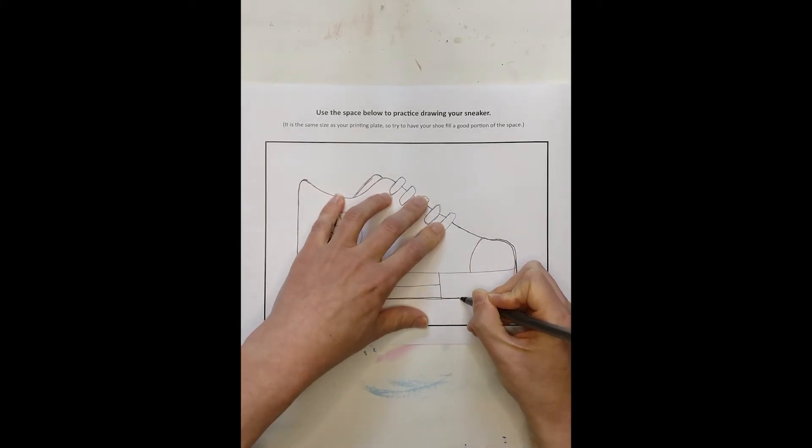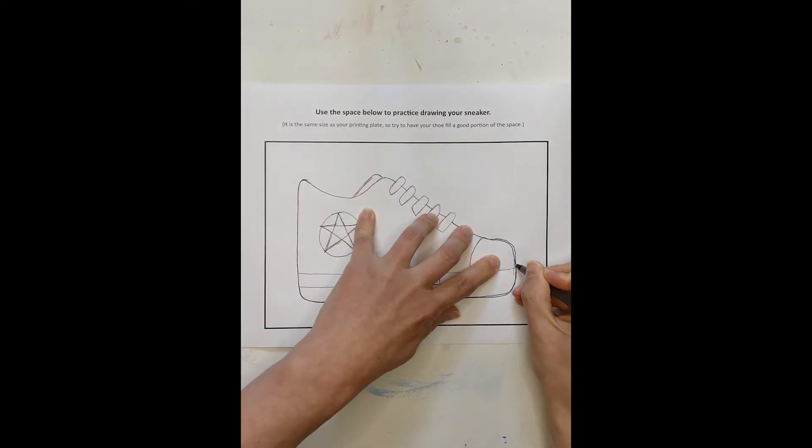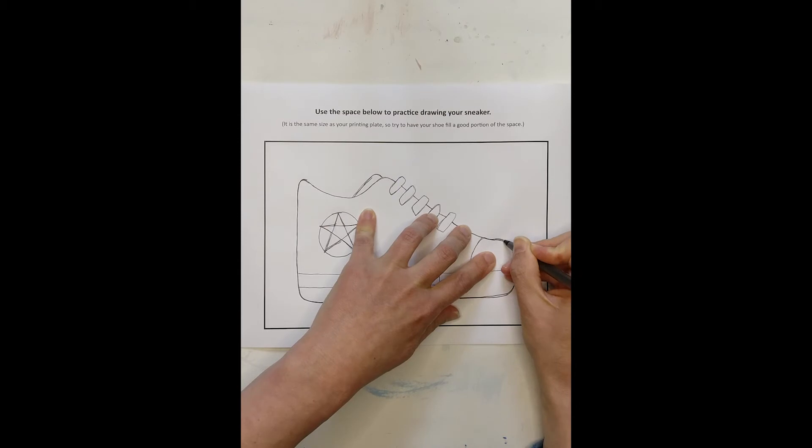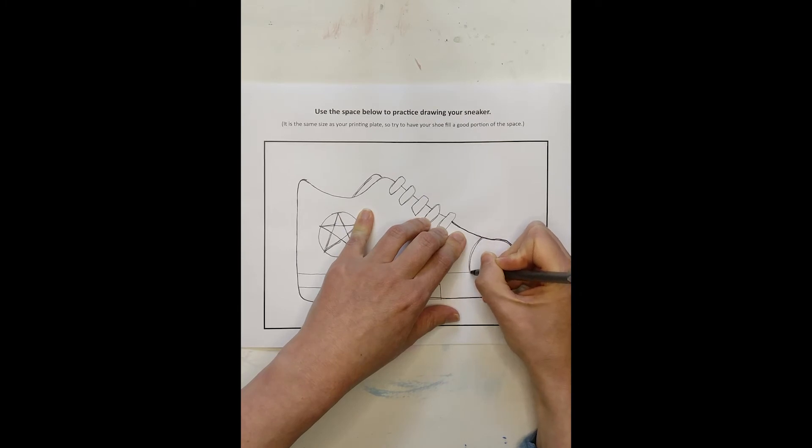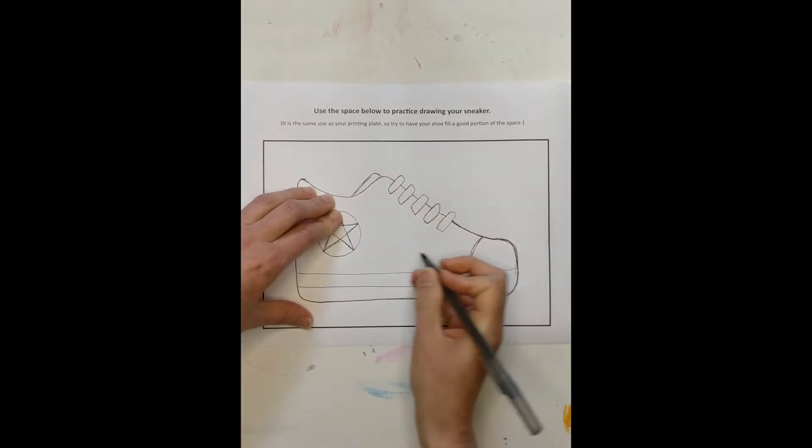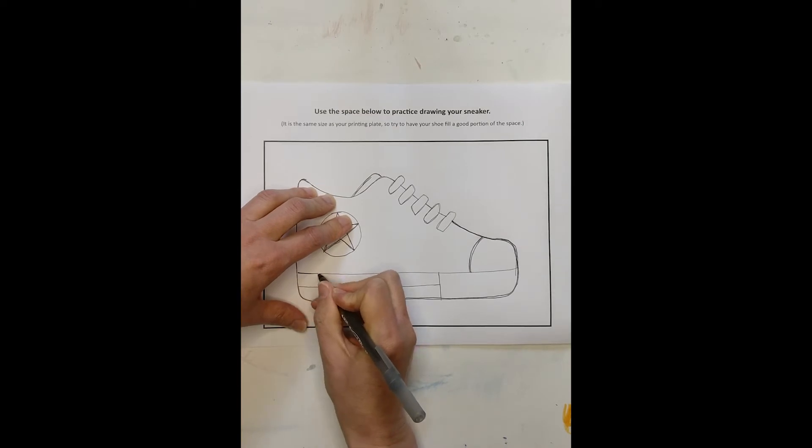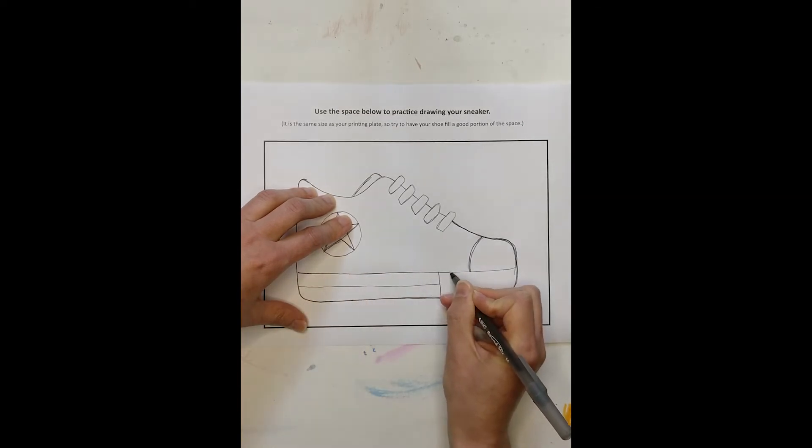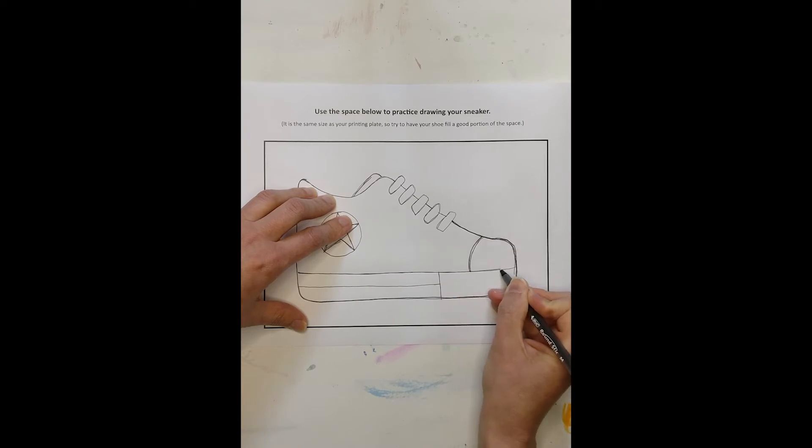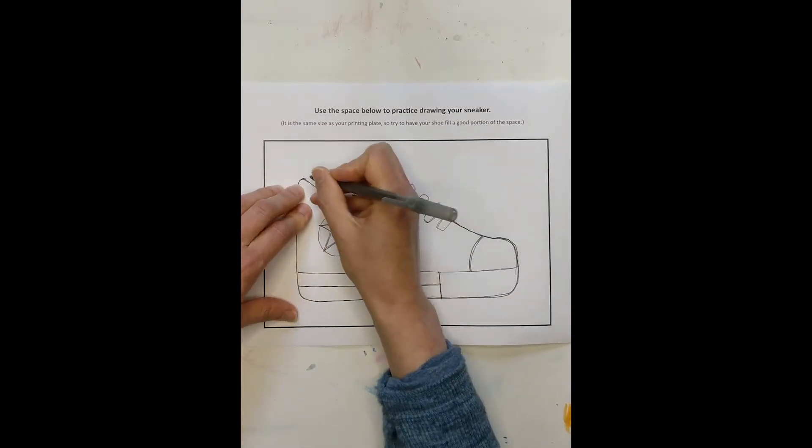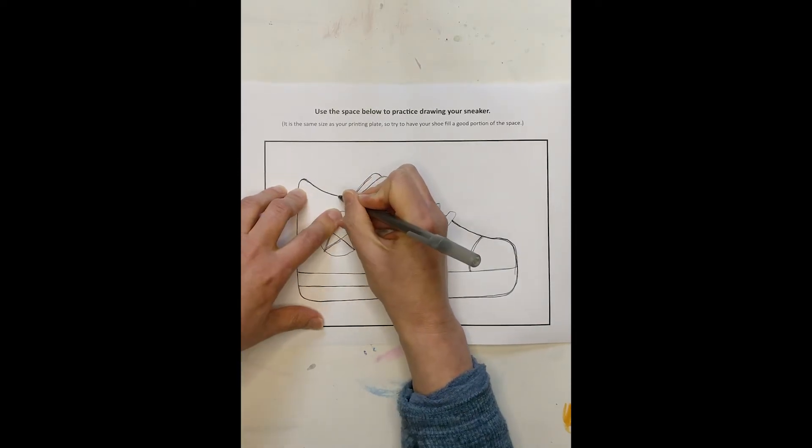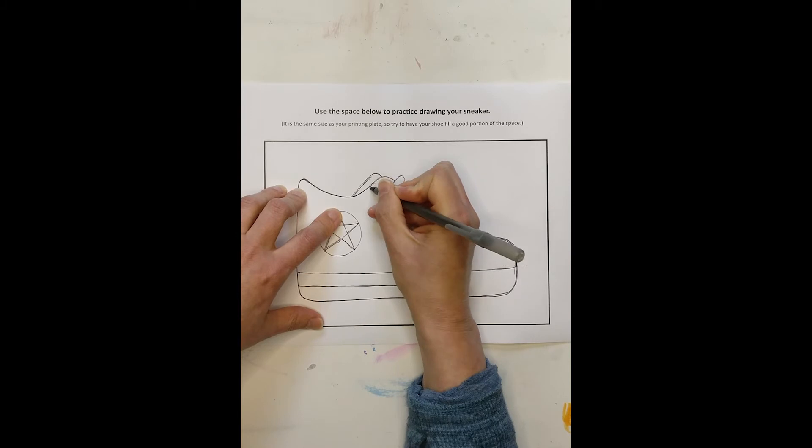But again, it doesn't have to be perfect, but I don't want to move my paper or my plate once I've lined them up. So if they end up being a little off from what I did the first time, that's okay. I'm not going to go over them again. I'm just going to go with what I've traced. And I can kind of hear it making the divot into the styrofoam.